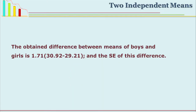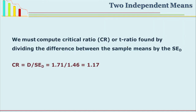Now we have to find out whether the actual difference between two means is significant or not. What is the difference between two means? The mean for boys was 30.92 and mean for girls was 29.21, so the actual difference is 1.71. For the naked eye we see there is a difference of 1.71, so boys are achieving more than girls. But is this due to chance or is this a true difference? That is what we want to establish, so we have to find out the critical ratio CR.